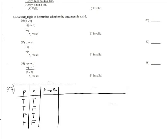Problem 37 is using a Truth Table again to determine whether the argument is valid or invalid. This is problem 37, this is 33.